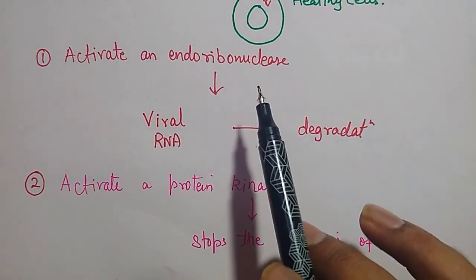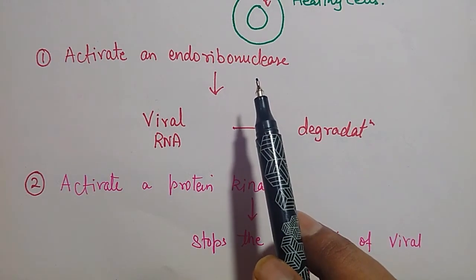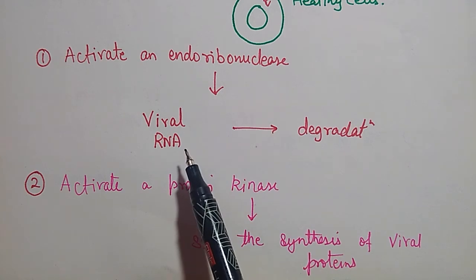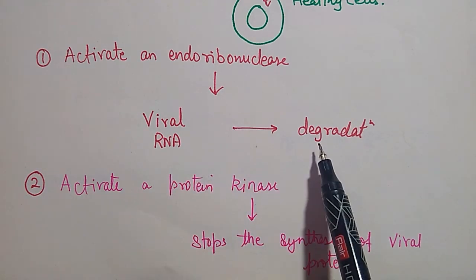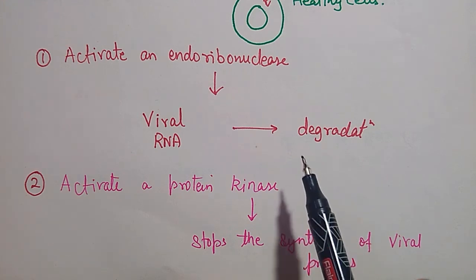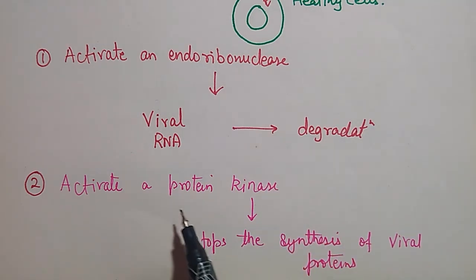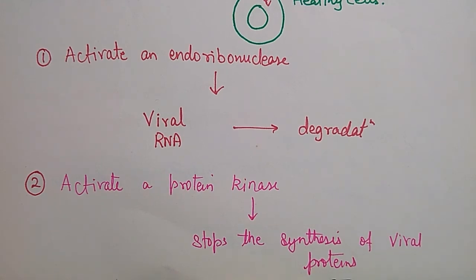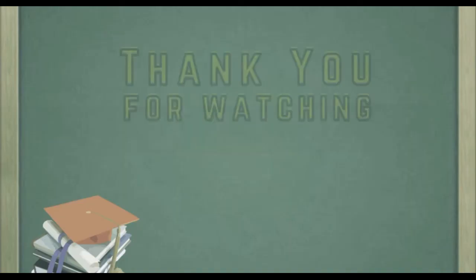In these healthy cells, two mechanisms are activated. First, there is activation of an endoribonuclease which degrades the viral RNA into nucleotides. Second, there is activation of a protein kinase which stops viral protein synthesis. By these two mechanisms, viral replication is inhibited.